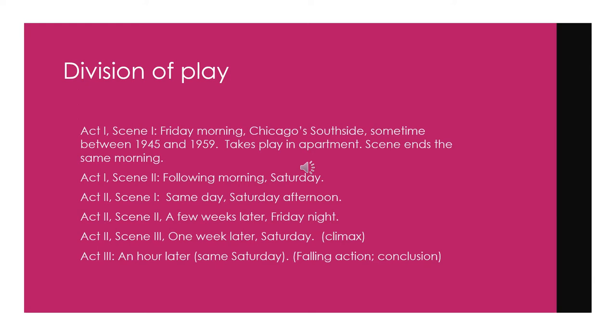The play is divided into six parts. The first part that we read this week is Act 1 Scene 1, which takes place on a Friday morning on Chicago's south side, sometime between 1945 and 1959. It takes place entirely in the Younger family's apartment. Act 1 Scene 1 ends the same morning, just probably an hour or two later. The next segment is Act 1 Scene 2, the following morning — Saturday morning — and that's when they're set to receive the life insurance check.